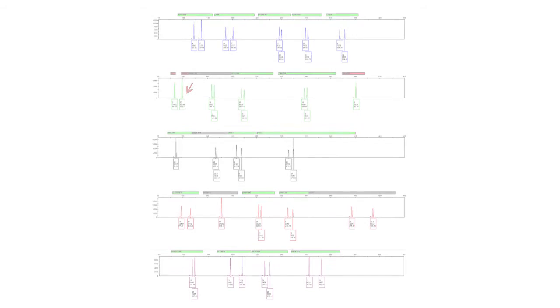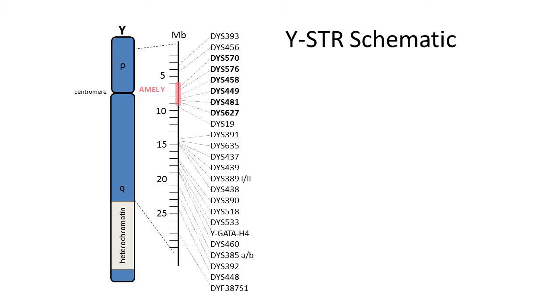Let's look at an example. Here we have a single-source male profile that is missing alleles at multiple markers. The affected markers are in close proximity on the Y chromosome, leading to the conclusion that there was a large deletion spanning a length of the chromosome and affecting all markers in that location. Using these markers to determine number of contributors could lead an analyst to underestimate the number of male contributors in a mixture.